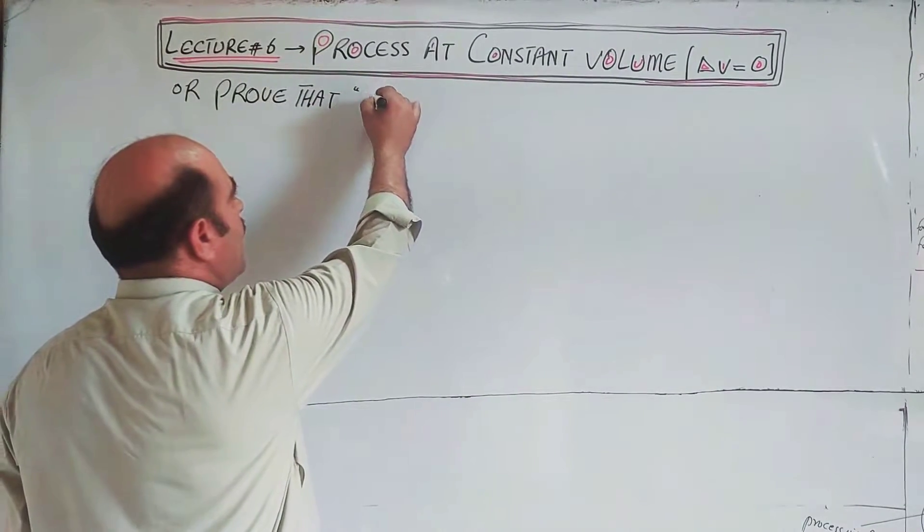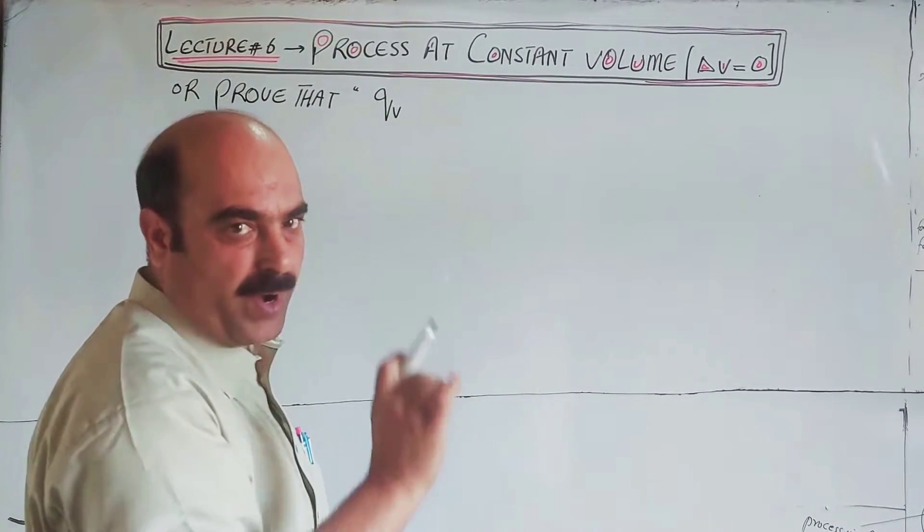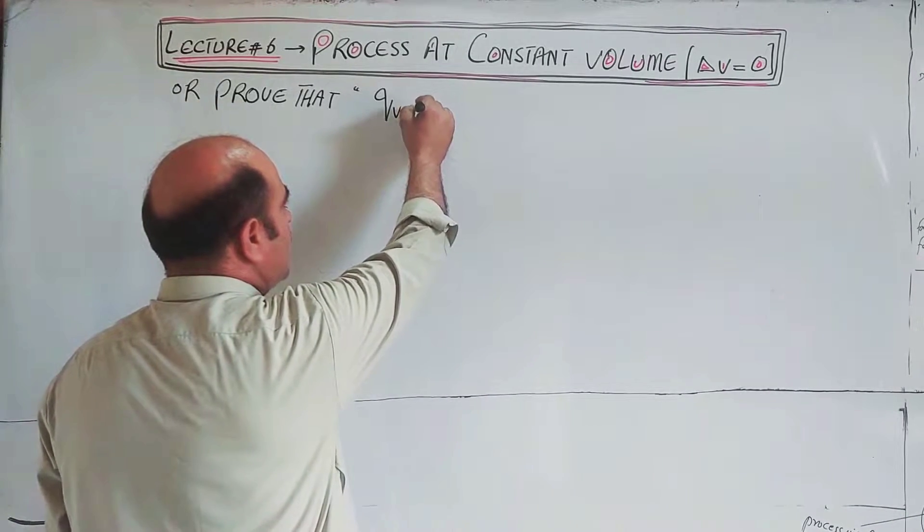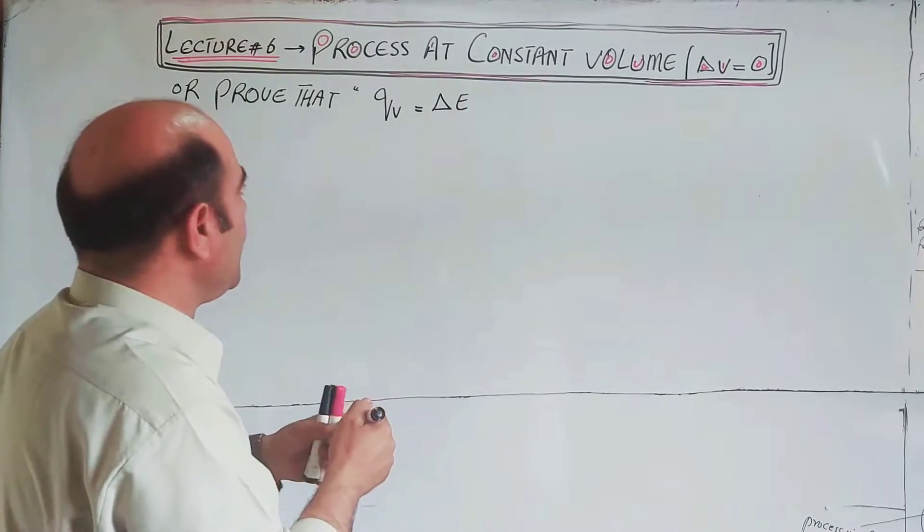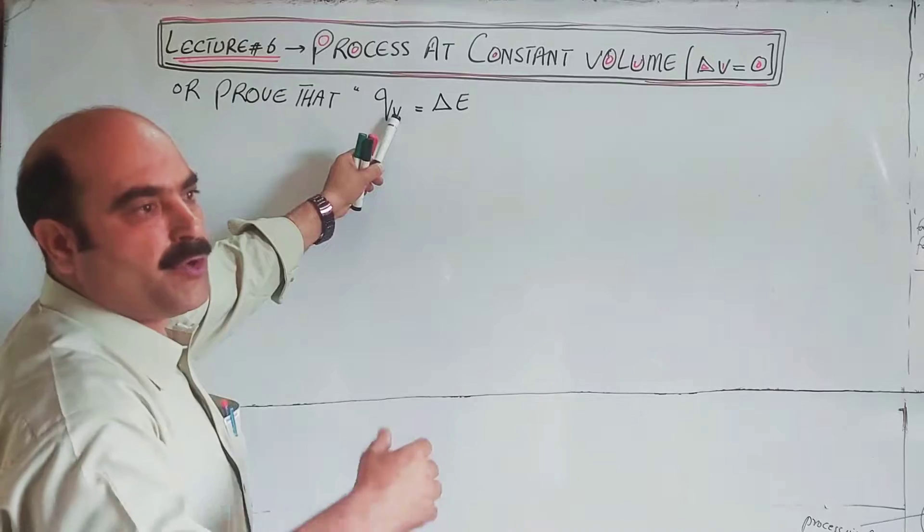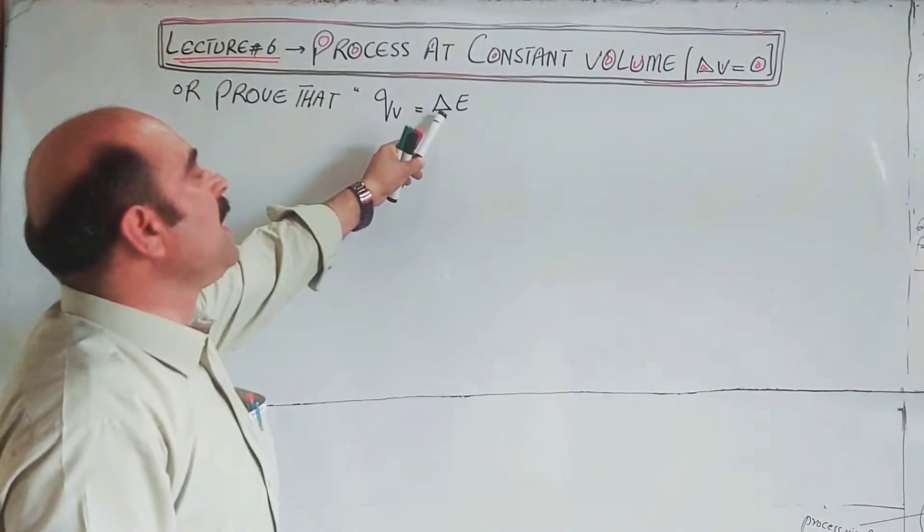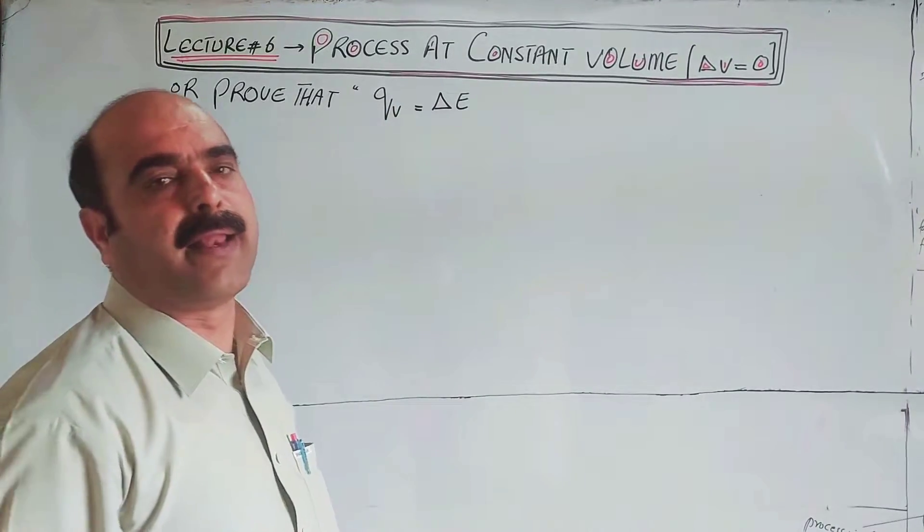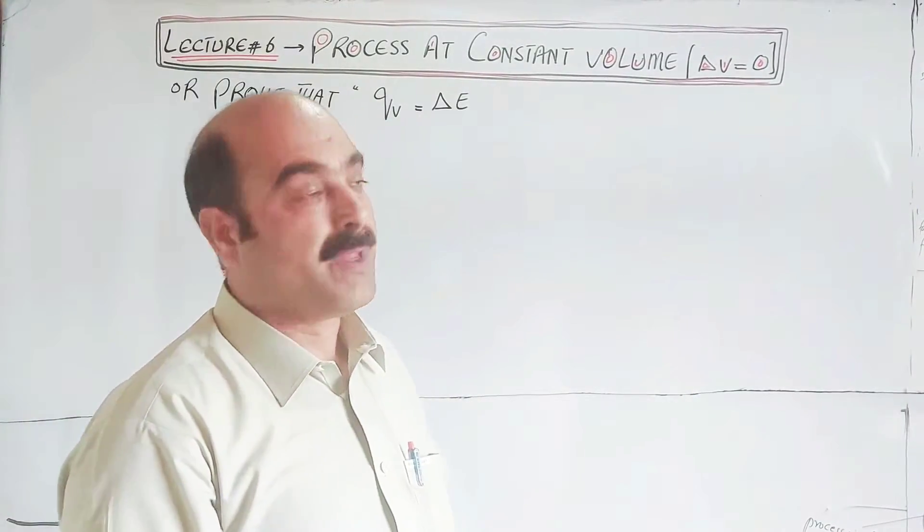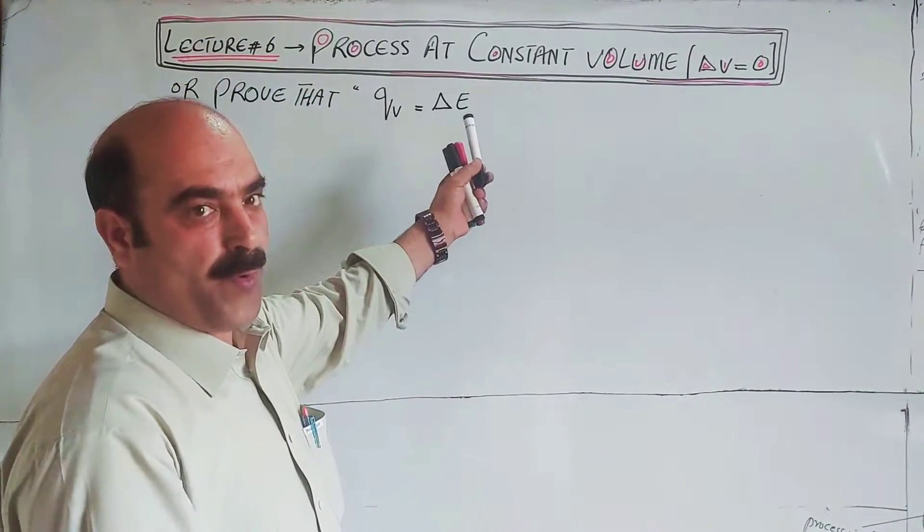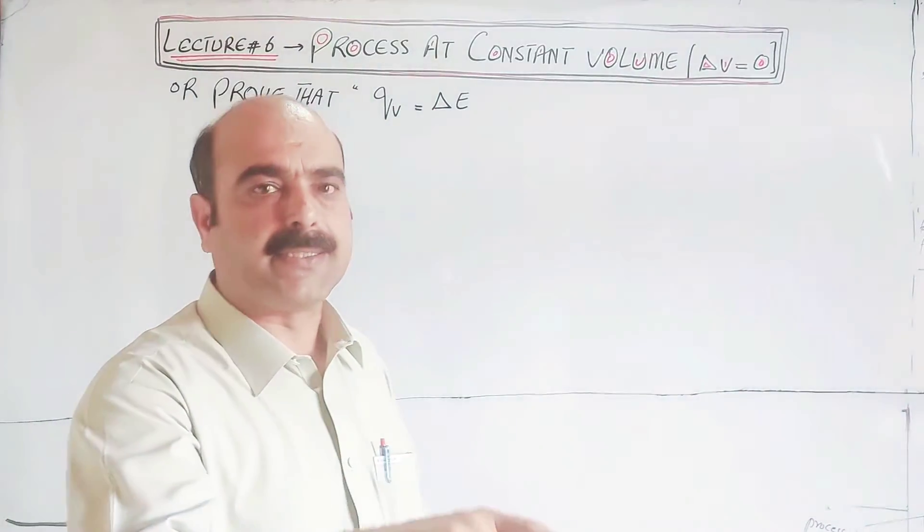Heat is supplied at constant volume where delta V equals zero, meaning Qv is equal to delta E. Heat supplied at constant volume to a system, when volume doesn't change, will only increase the internal energy of the system.